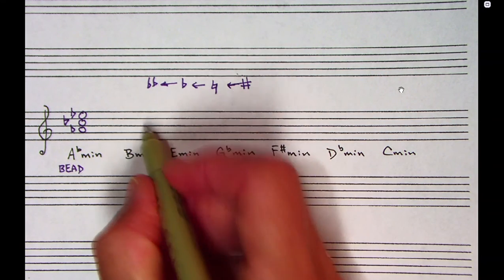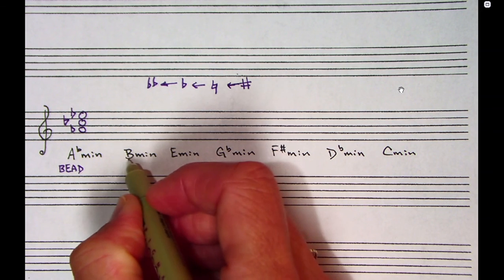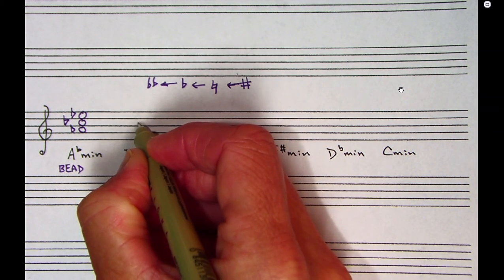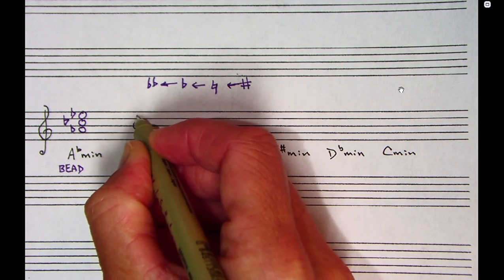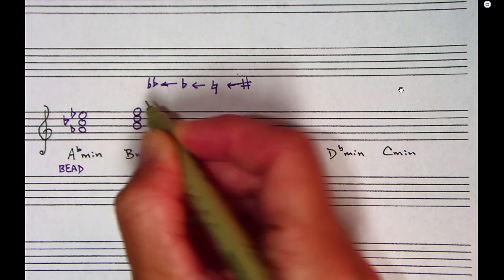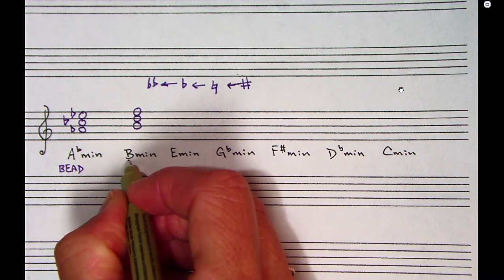Alright, going into the next example, B minor. So I'm going to think B major triad. B is my bottom note. There's a B, there's a D, there's an F. I'm going to list what is in B major. That is F, C, G, D, and one more A.